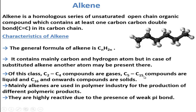From pentene up to carbon 15, compounds exist in liquid state, and carbon 16 and onwards compounds exist in solid state. Mainly alkenes are used in the polymer industry for the production of different polymeric products, and we will know about these polymeric products in this chapter in next classes.